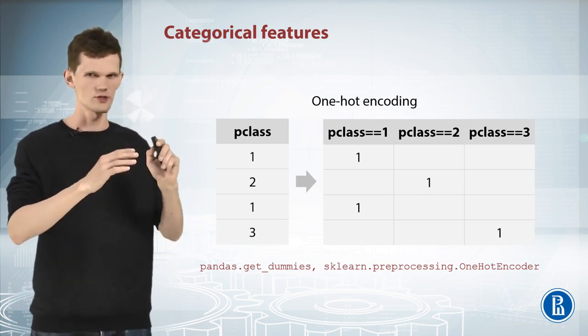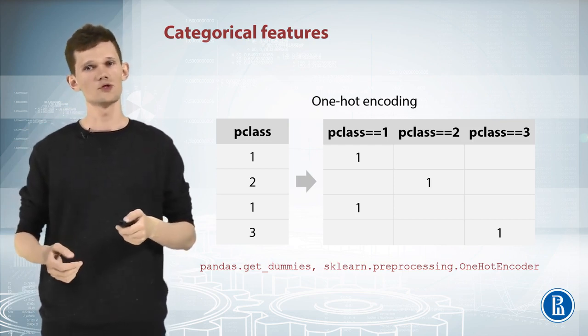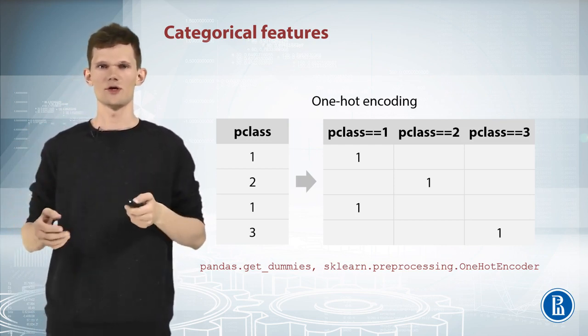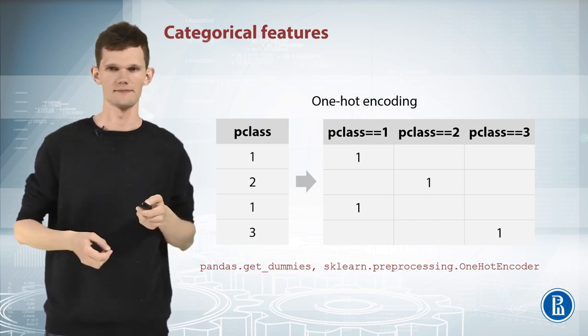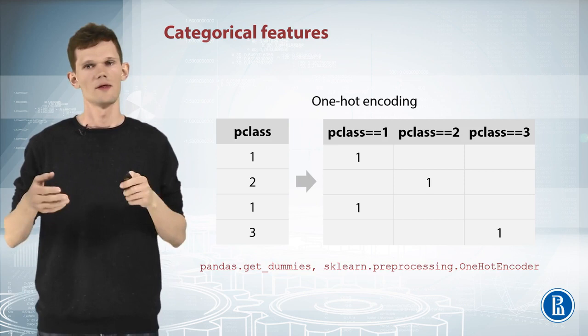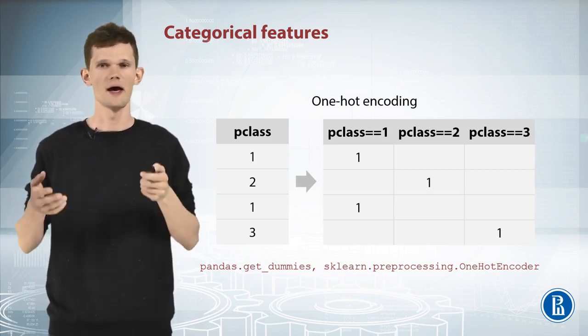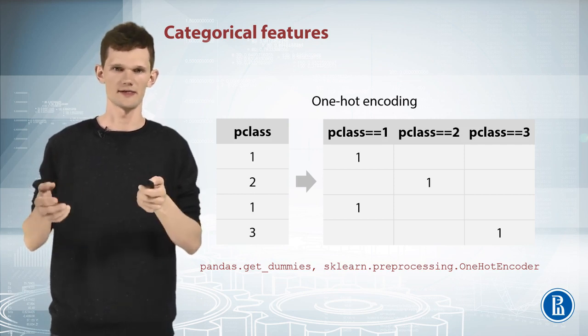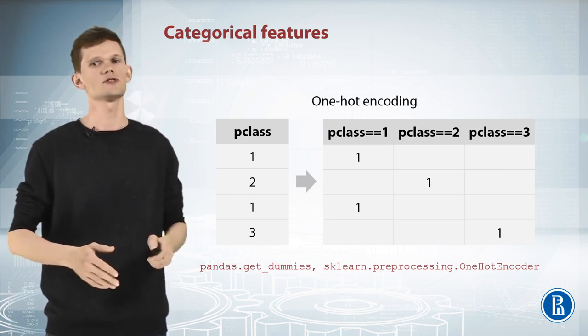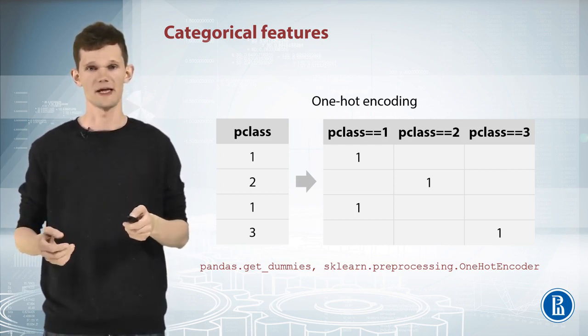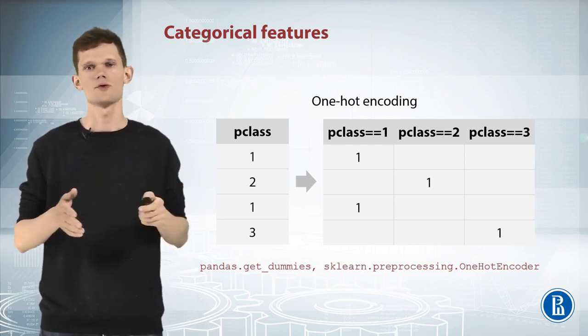The way to adapt categorical features to non-tree-based models is also quite straightforward. We need to make new columns for each unique value in a feature and put one in appropriate place. Everything else will be zeros. This method is called one-hot encoding. Let's see how it works on this quick example. So here, for each unique value of p-class feature, we just created a new column. As I said, this works well for linear methods, KNN or neural networks.